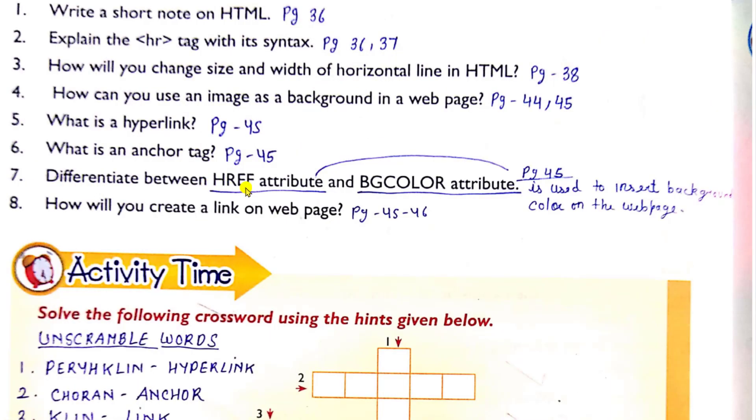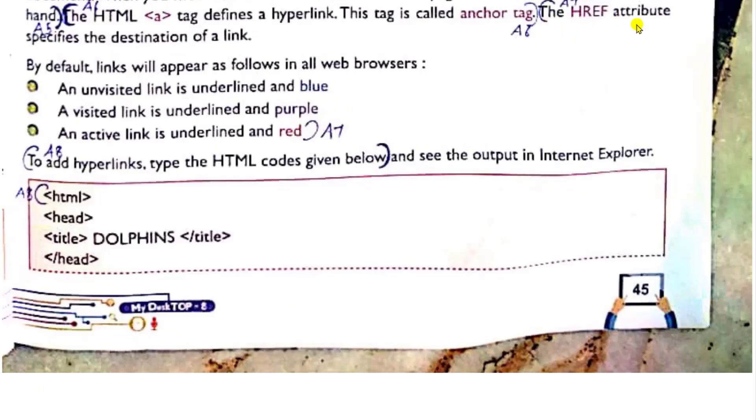Question seven. Differentiate between href attribute and bgcolor attribute. So for href attribute, we have to move to page number 45. But for bgcolor, simply you can write bgcolor attribute is used to insert background color on the web page. And for href attribute, we are moving to page number 45. The href attribute specifies the destination of a link. By default, links will appear as follows in all web browsers. All three points you have to write till here. Everything you have to write in your copy.